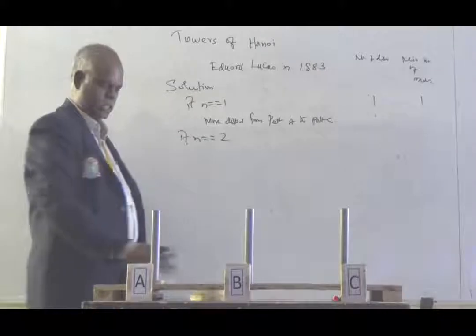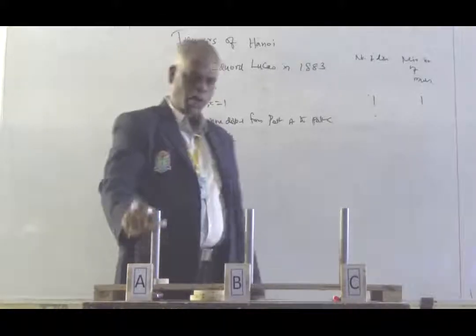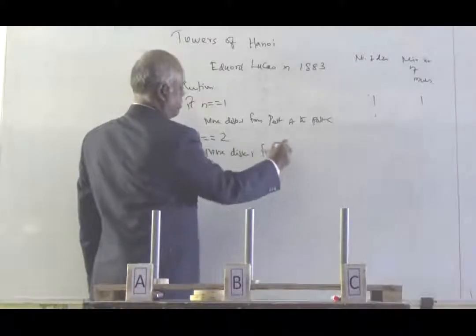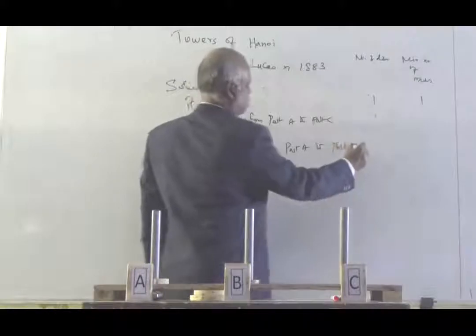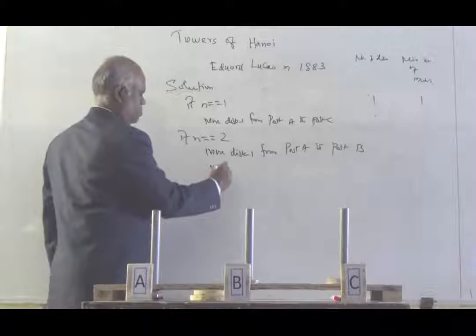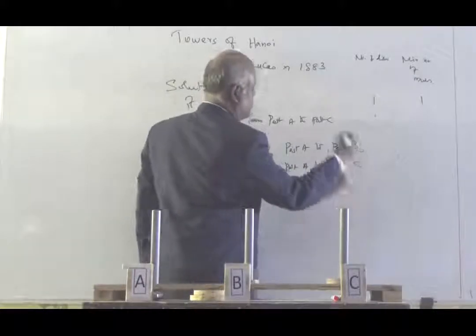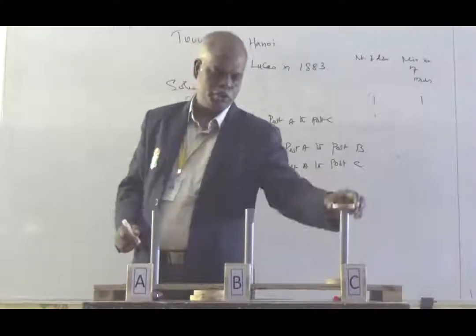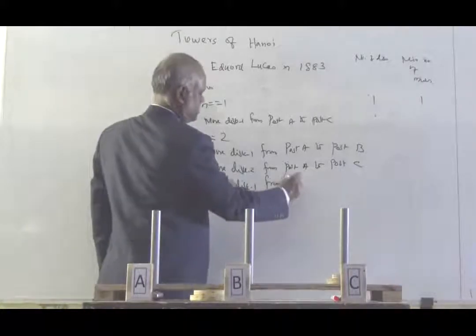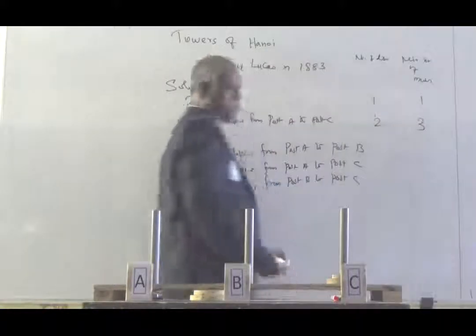If we assume there are two discs in post A, the steps are: move disc 1 from post A to post B, then move disc 2 from post A to post C, and finally move disc 1 from post B to post C. So for n equals 2, the number of steps is 3.